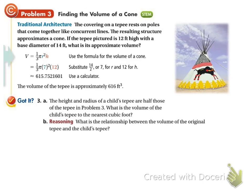We're going to use their problem, our story problem, or our got it problem makes it a little different. It says, the height and radius of a child's teepee are half those of the teepee in problem 3. In problem 3, the teepee was 12 feet high. So that means our height for this one is half of that. That's 6 feet.